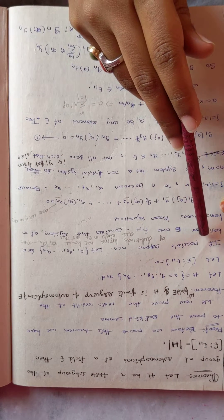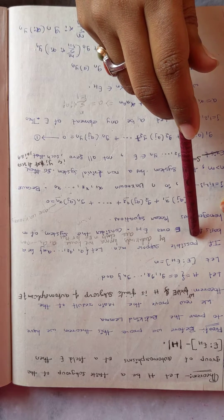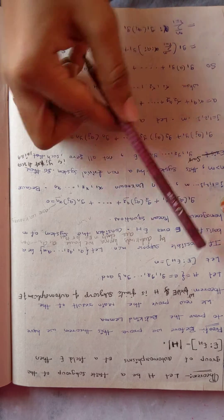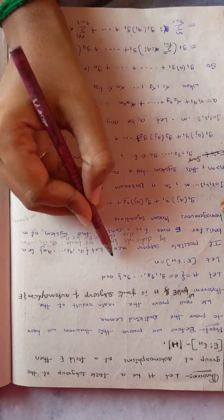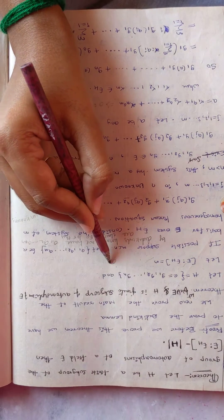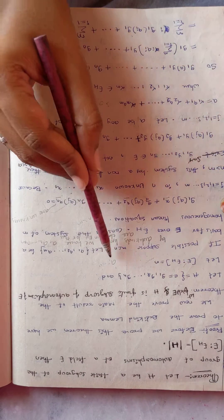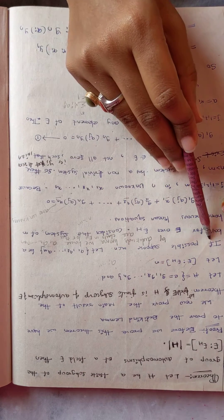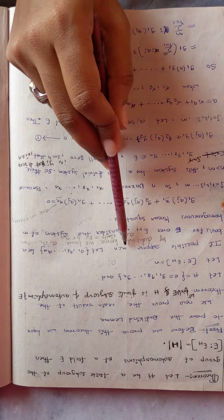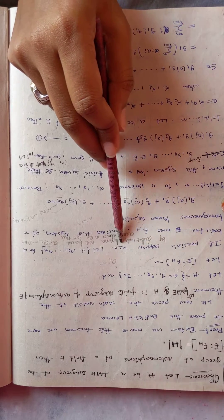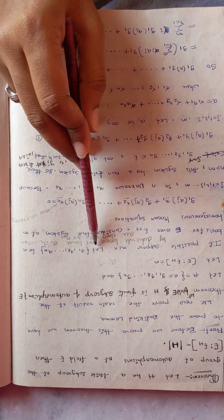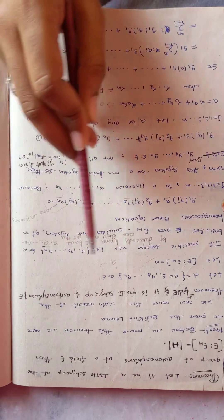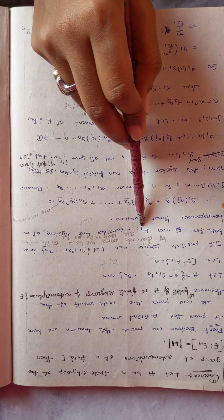By Dedekind's Lemma, we prove M equals N and all coefficients Aᵢ equal 0 for i = 1 to N. We suppose that M is less than N. Let A₁, A₂, ..., Aₘ be the basis of E^H.